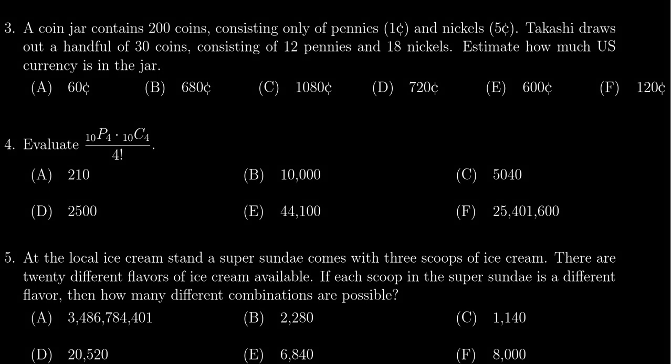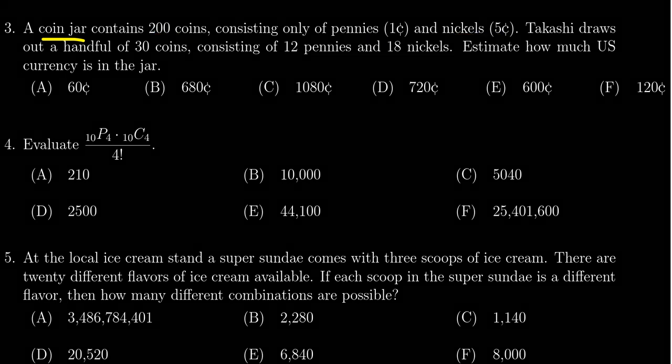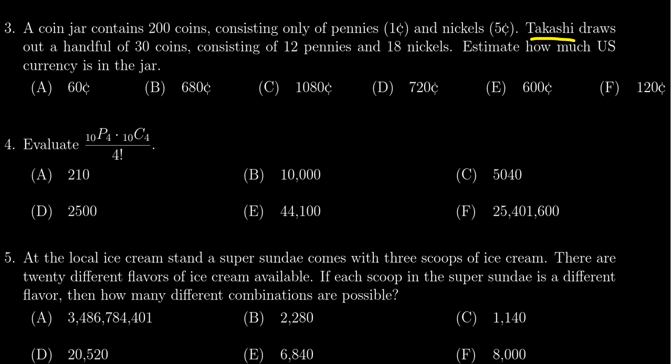In this video we provide the solution to question number three for practice exam number four for Math 1030. We have the following situation: a coin jar containing 200 coins consisting of pennies and nickels, which is one cent and five cents respectively. Takashi draws out 30 coins from the jar and it consists of 12 pennies and 18 nickels. We want to estimate how much currency is inside the jar.